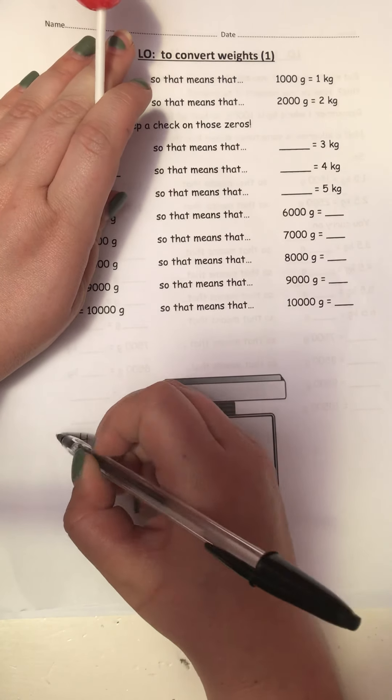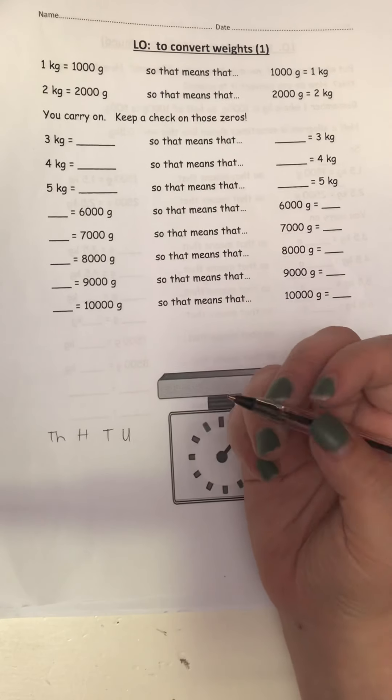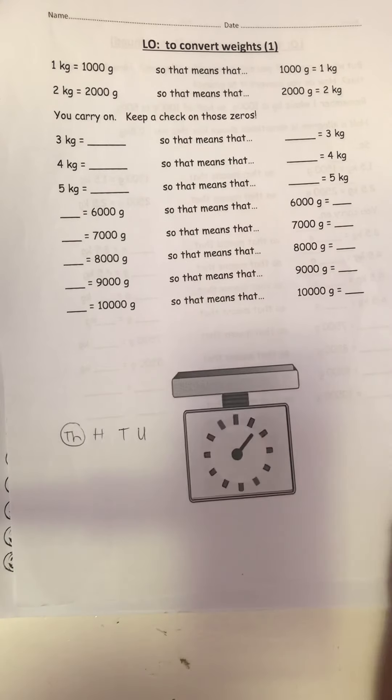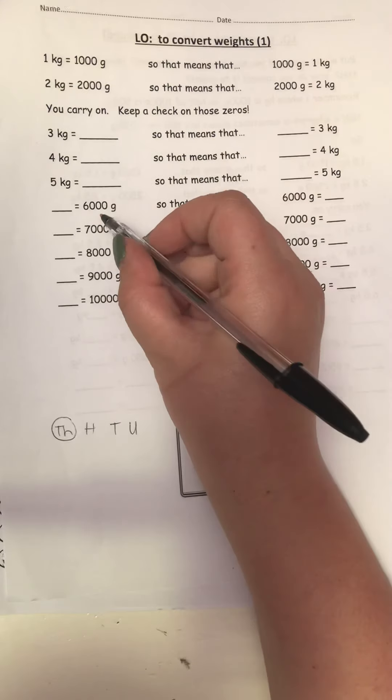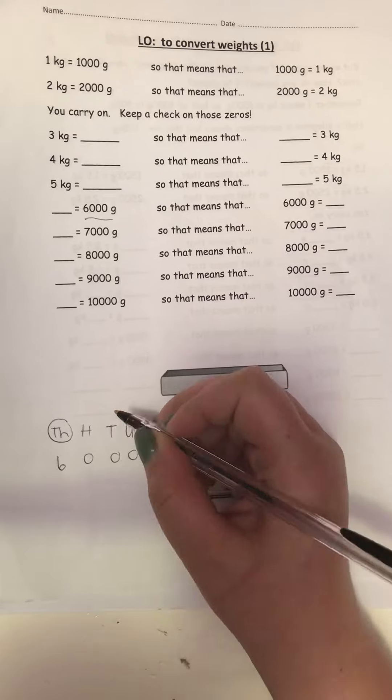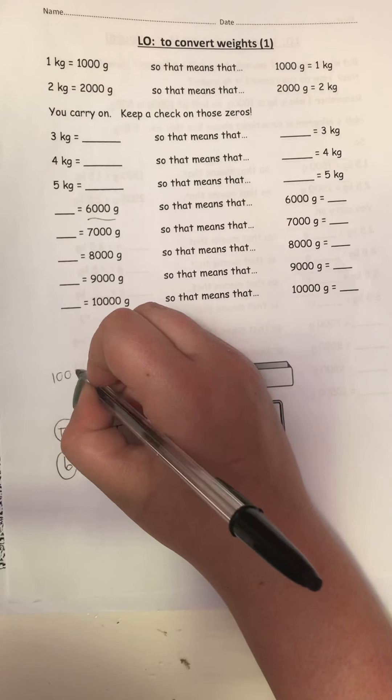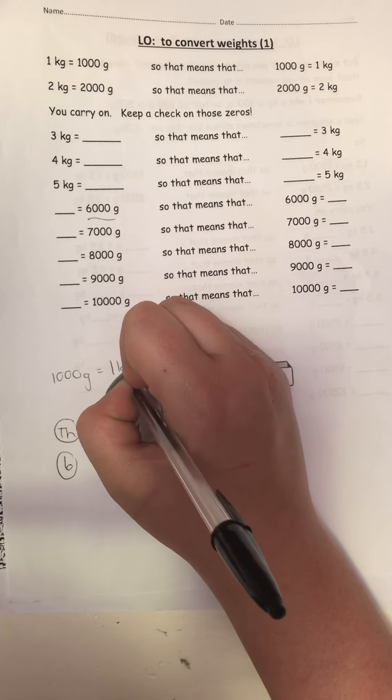For example, let's say 6,000 grams. Immediately I know this 6 is a kilogram because 1,000 grams is the same as 1 kilogram. So as soon as you have something to write in the thousands house, it is kilograms.